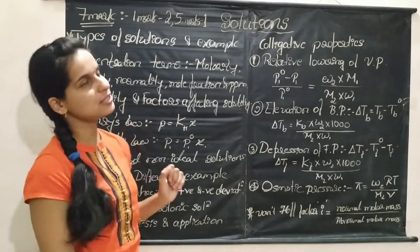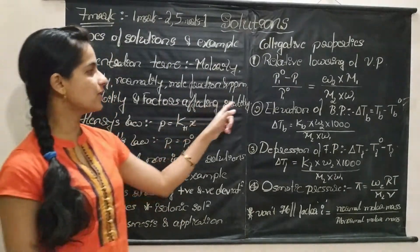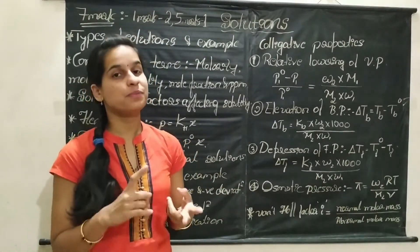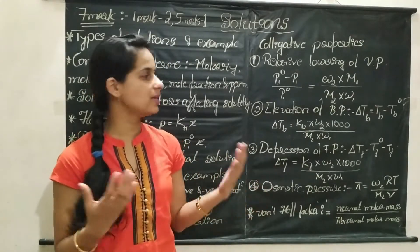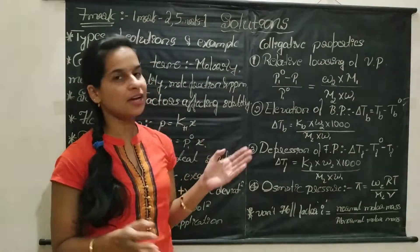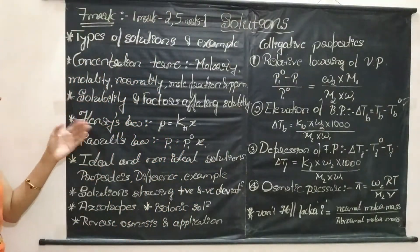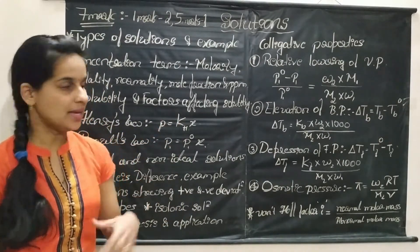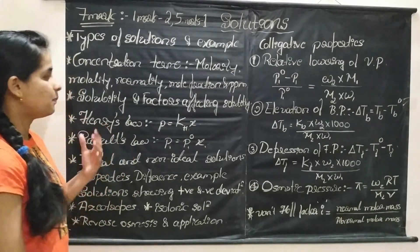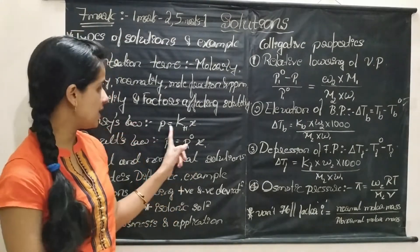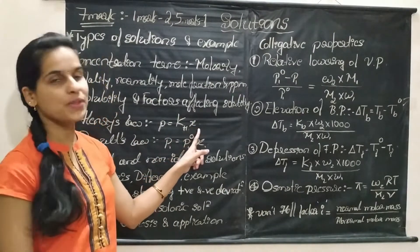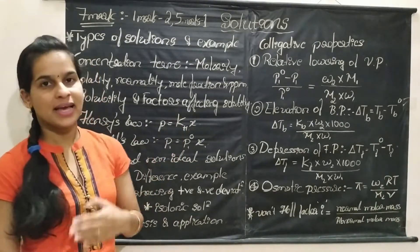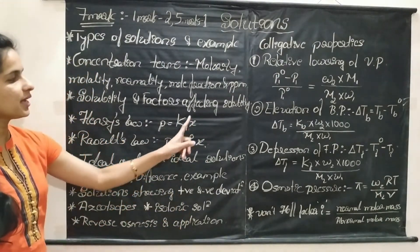Then, solubility and factors affecting solubility. Factors affecting solubility is a very important concept — how does solubility change with temperature, pressure, or nature of the solvent and solute. These factors are very, very important. Then, Henry's law: the statement of Henry's law and Raoult's law and their mathematical expressions are important. In case of Henry's law, the statement is: the partial pressure of the gas in vapor phase is directly proportional to the mole fraction of that gas in solution. The proportionality constant KH is called Henry's constant. P = KH × X.